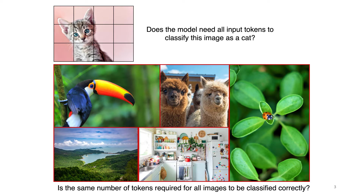But look at this image on the top of the page. Does the model need all input tokens to classify this image as a cat? Of course not. For example, those tokens that are related to a homogeneous background are redundant and they can be easily removed.